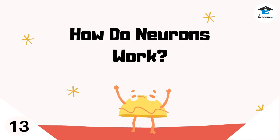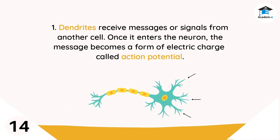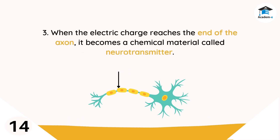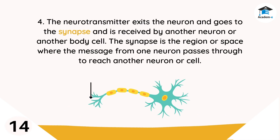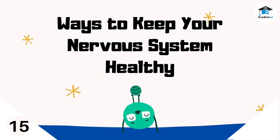How do neurons work? One: dendrites receive messages or signals from another cell; once it enters the neuron, the message becomes an electric charge called action potential. Two: from the cell body, this action potential travels the length of the axon. Three: when the electric charge reaches the end of the axon, it becomes a chemical material called a neurotransmitter. Four: the neurotransmitter exits the neuron and goes to the synapse and is received by another neuron or body cell. The synapse is the region or space where the message from one neuron passes through to reach another neuron or cell.